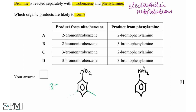Whereas with our phenylamine, we can get substitution at positions two or four. This is because our NH2 group donates electrons into the ring, therefore activating the ring. Hence, it's a 2,4-directing group overall.